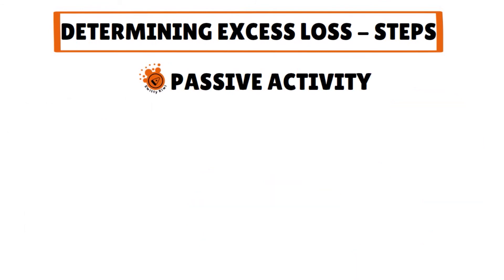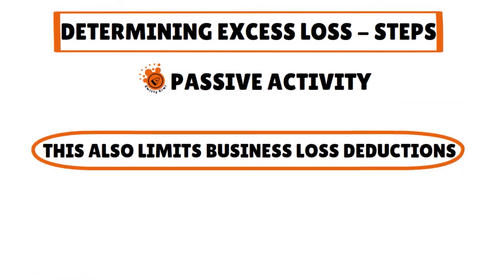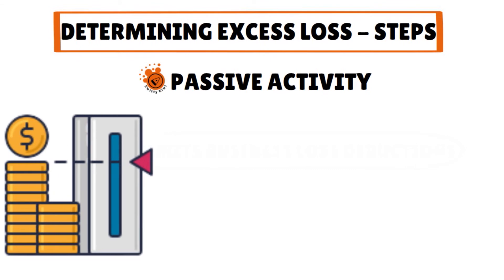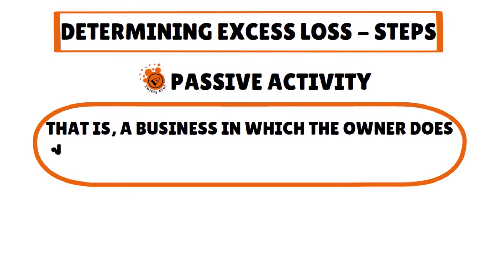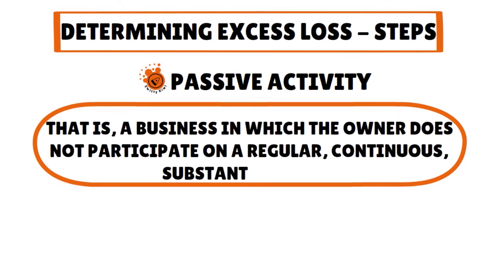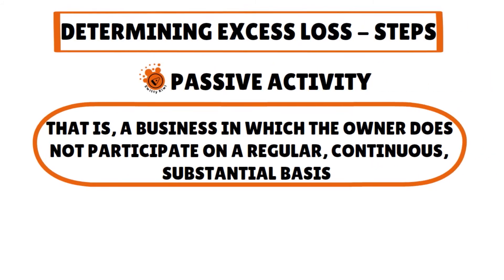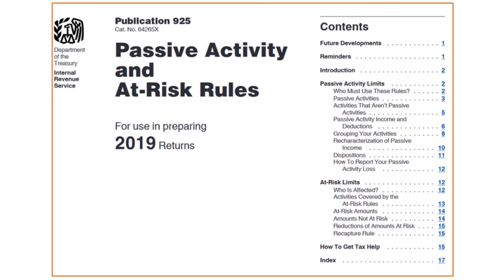Let's talk about passive activity — this also limits business loss deductions. Business losses may be limited if they result from what the IRS calls passive activity, that is, a business in which the owner does not participate on a regular, continuous, or substantial basis. Losses resulting from passive activity can only be deducted up to the amount of income from that business. For more details about at-risk rules and passive activity, see IRS Publication 925 — we have a screenshot here. Publication 925 details everything you need to know.